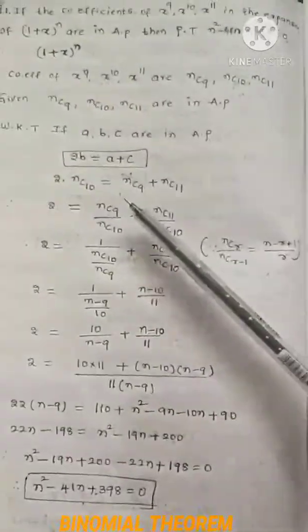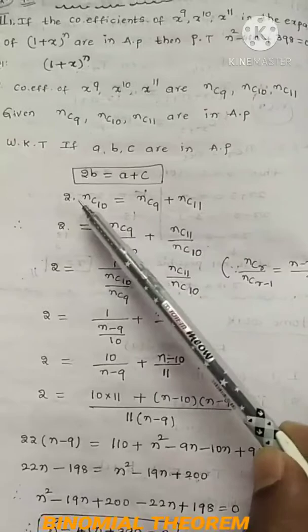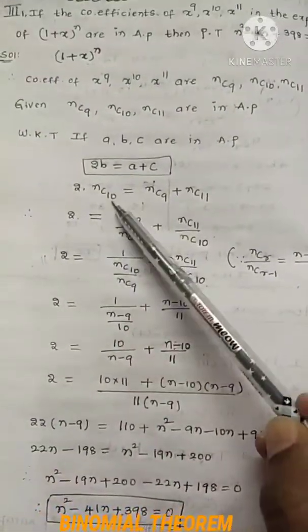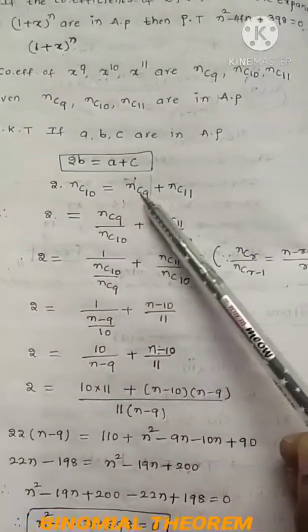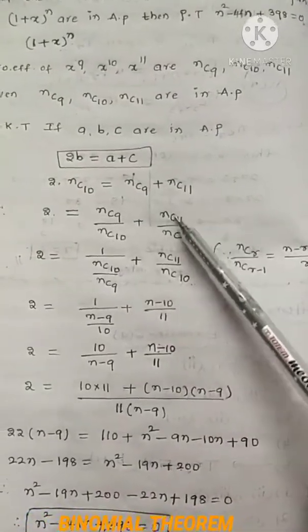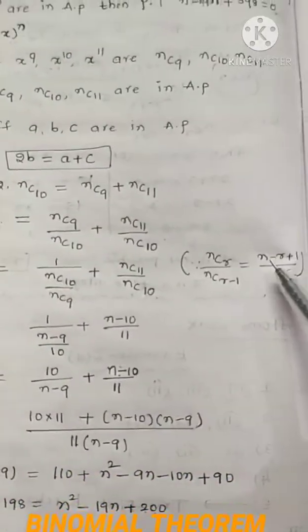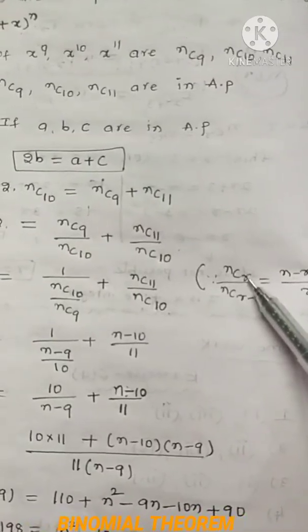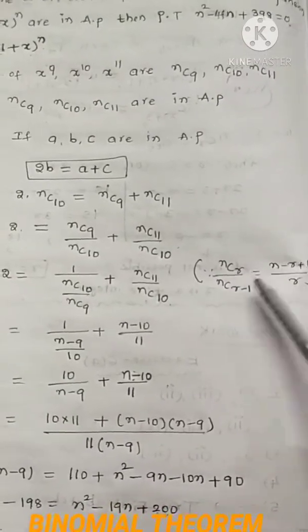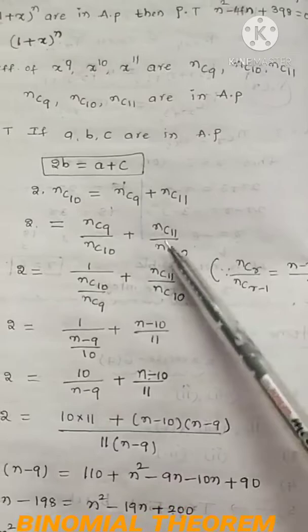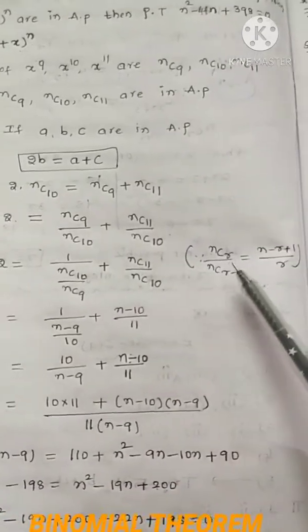There are three or four methods for this problem; I am explaining the best method. Divide both sides by nC10. So 2 = nC9/nC10 + nC11/nC10. Now rewrite the right side: 1 divided by (nC10/nC9) plus nC11/nC10.